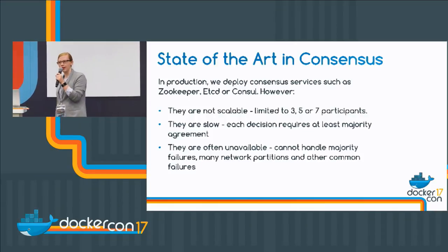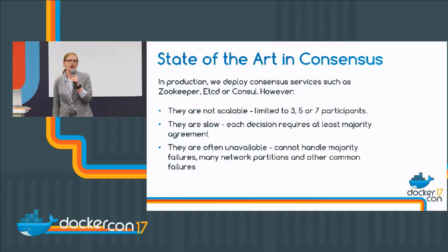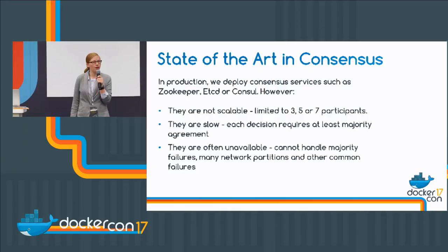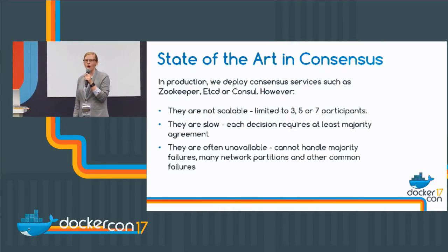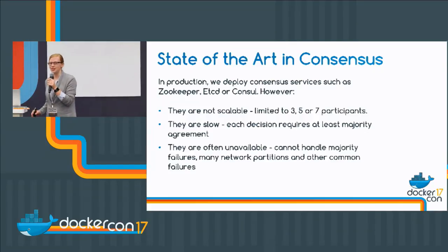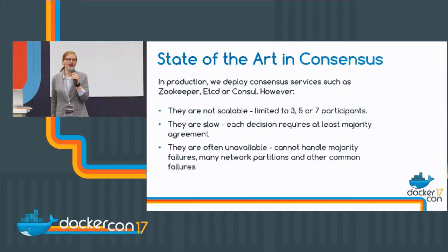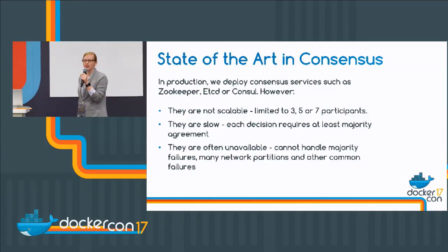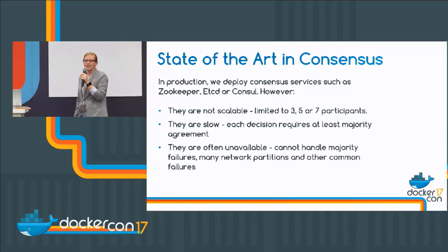But the reality is that they are quite limited in practice. Usually when we're deploying consensus, we deploy across three nodes or five nodes — or if you're being really adventurous, maybe seven nodes. But the practical reality is these systems just don't scale beyond that, and these systems are slow.